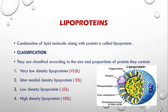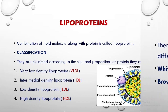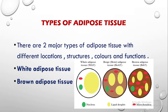Lipoproteins, as the name suggests, are a combination of a lipid molecule along with a protein molecule. They are classified according to their size and the proportions of proteins they contain. If they contain very low density lipoproteins we call them VLDL, intermediate density lipoproteins are IDL, low density lipoproteins are LDL, and high density lipoproteins are HDL. The structure of a lipoprotein contains triglyceride molecules surrounded by cholesterol bound to fatty acids, and around it are phospholipids, proteins, and free cholesterol.